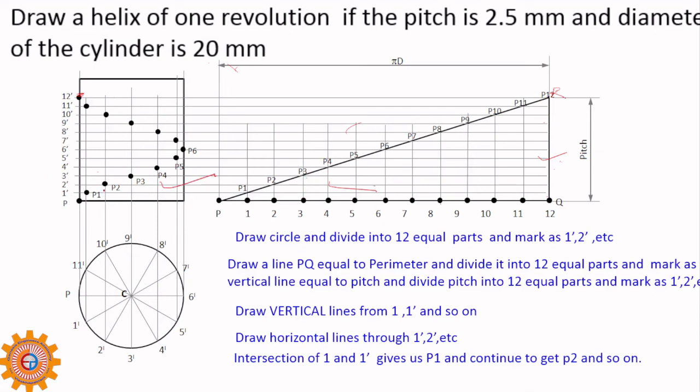P1 is obtained by intersecting this vertical line and this horizontal line. What we have to do? You have to divide this circle into 12 parts, and this pitch. This P to 12 dash is pitch. That I have shown here. That's all.